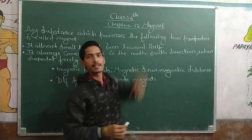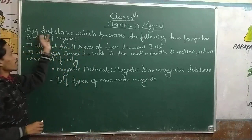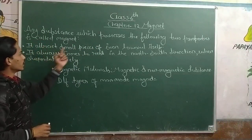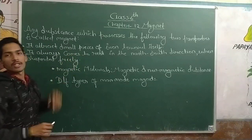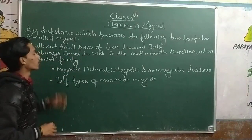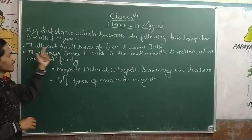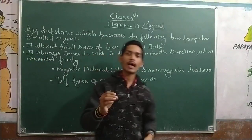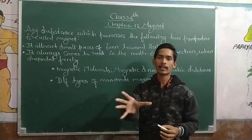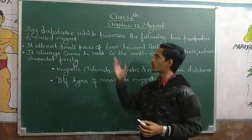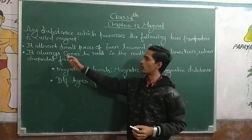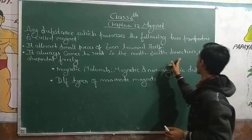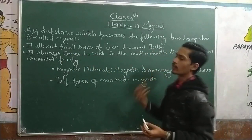First, we have to discuss the properties of a magnet. Any substance which possesses the following two properties is called a magnet. First property: it attracts small pieces of iron toward itself. Second property: it always comes to rest in the north-south direction when suspended freely.